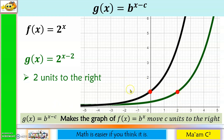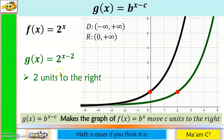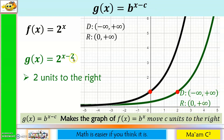Now let us determine the domain and range. For our mother function, we already know that its domain is from negative infinity to positive infinity, and the range is from 0 to positive infinity. For our g of x, the green one, the domain is also the same — from negative infinity to positive infinity — and the range too, from 0 to positive infinity, 0 not included. So adding negative 2 to your exponent does not affect the domain and range of your original function.